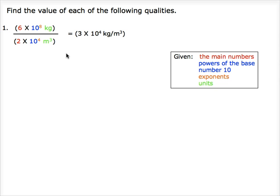To solve question number 1, we have to divide the main numbers. To divide the base numbers, the tens, with their exponents, we simply subtract the exponents. Here is the answer, and the final unit was found by dividing kilograms by meters cubed.